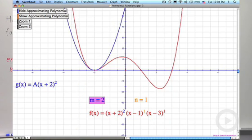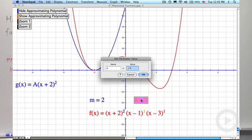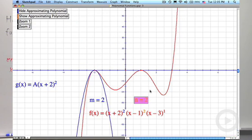All right, let's take it back to 2. Now, we can do this with both of these two intercepts. I'm going to take x minus 1 to the 1 and make it x minus 1 to the 2. And so now you see that I've got quadratic behavior at both negative 2 and at 1.